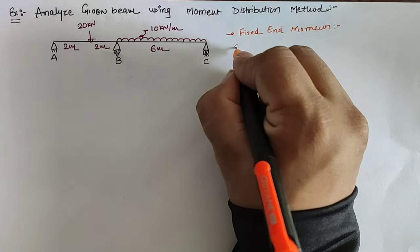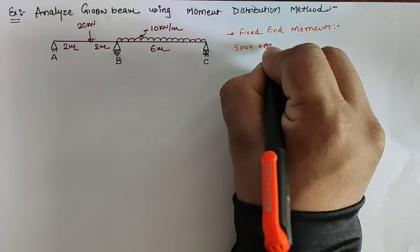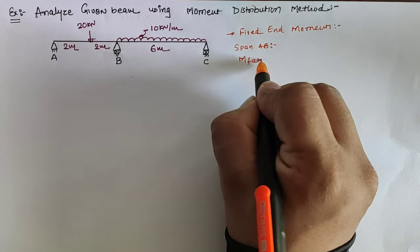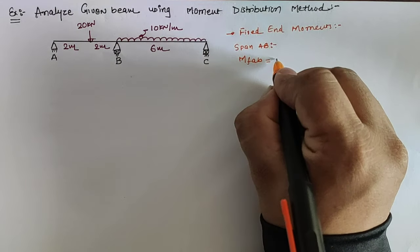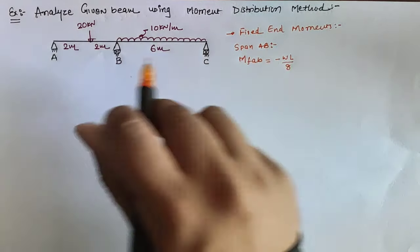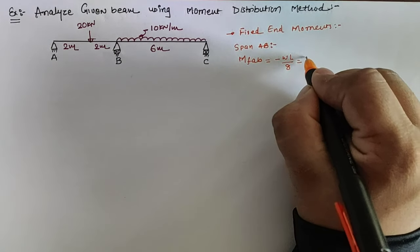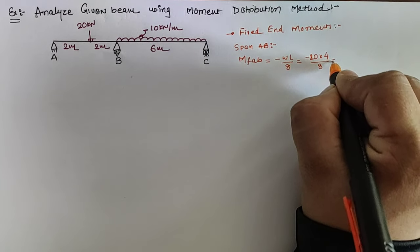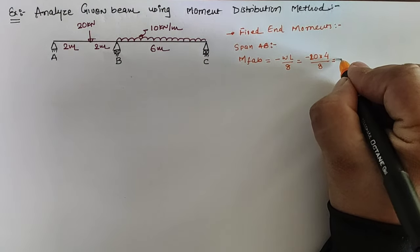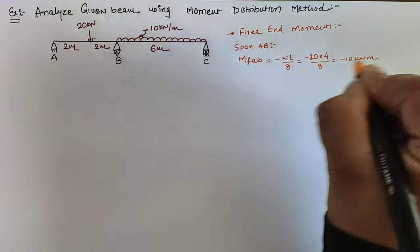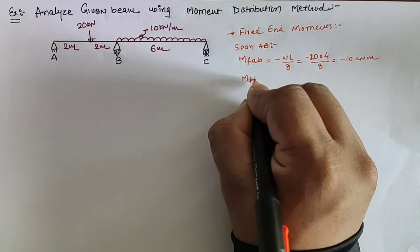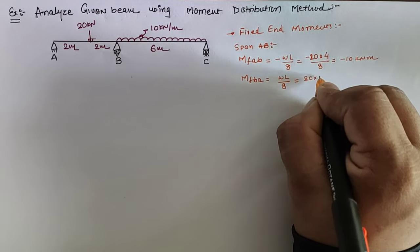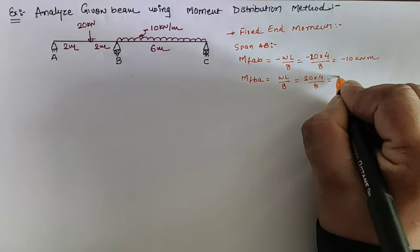For span AB, our fixed end moment from A to B is negative WL/8 for the center point load: minus 24/8, which equals minus 10 kilonewton meter. Similarly, for span BA the fixed end moment is plus WL/8, so 24/8, which equals plus 10 kilonewton meter.